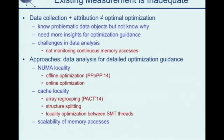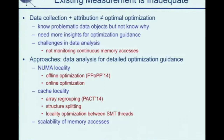We move one step further to analyze the program and provide more insight. We currently focus on NUMA locality optimization — both offline and online optimization with more insights — and cache locality, providing guidance on which arrays can be regrouped to benefit spatial locality and which structures can be split to avoid cache fragmentation and cache waste. We also focus on simultaneous multi-threading architecture and how to enhance data locality between different SMT threads. Finally, we extend the tool to identify scalability bottlenecks caused not only by locks or synchronization, but also by memory accesses.